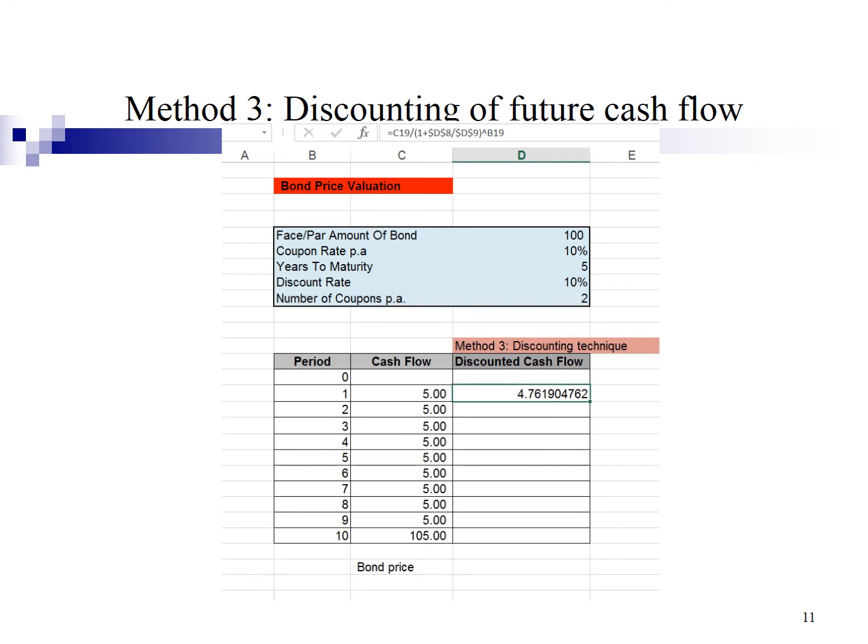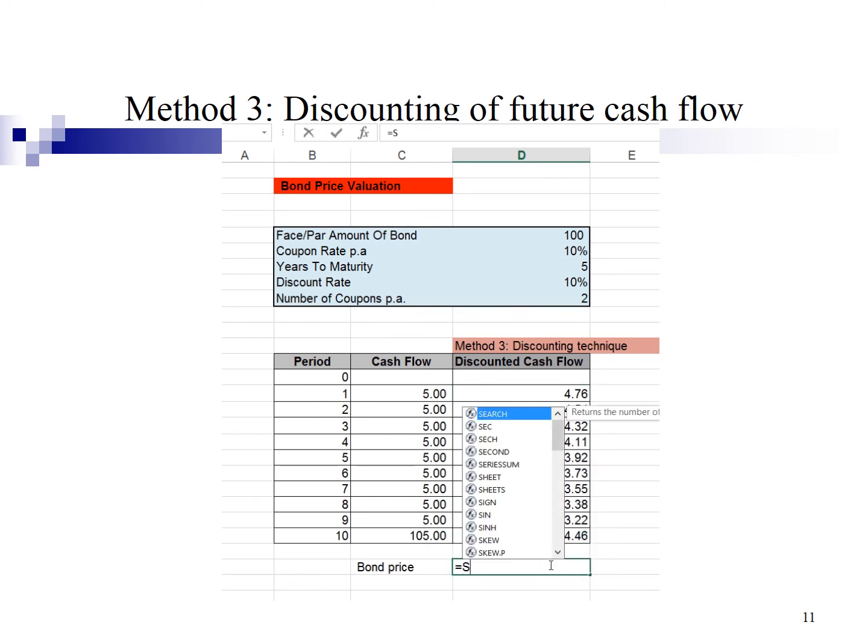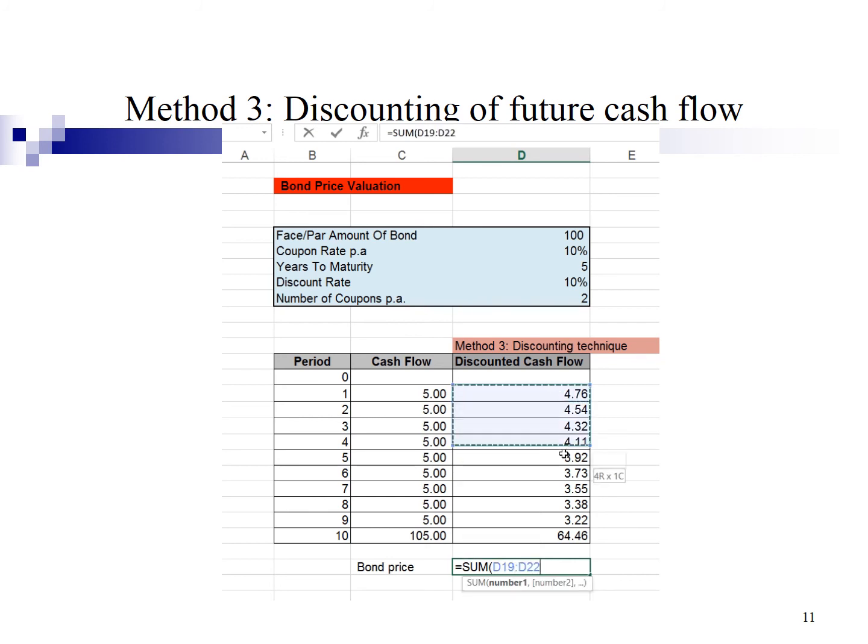Let me reduce the number of decimal place. Okay, all right. After that, I'm going to drag all the way down to discount the rest of the cash flow. Next, I will type equal sum open bracket and highlight all the cash flow. Close bracket, enter. The bond price is also 100. The bond price is the present value of all future cash flow.